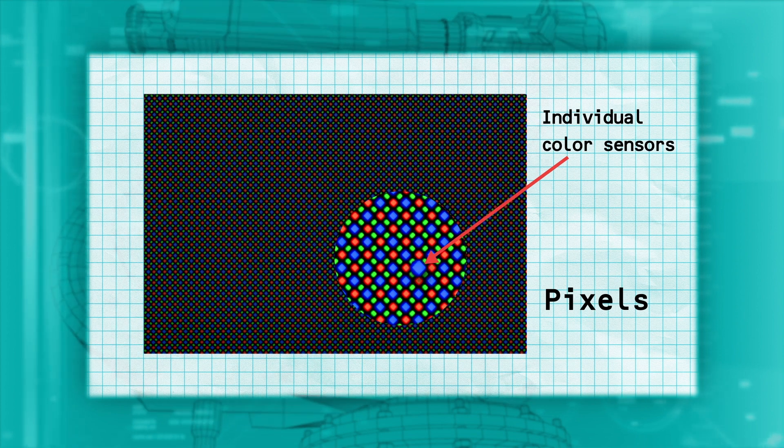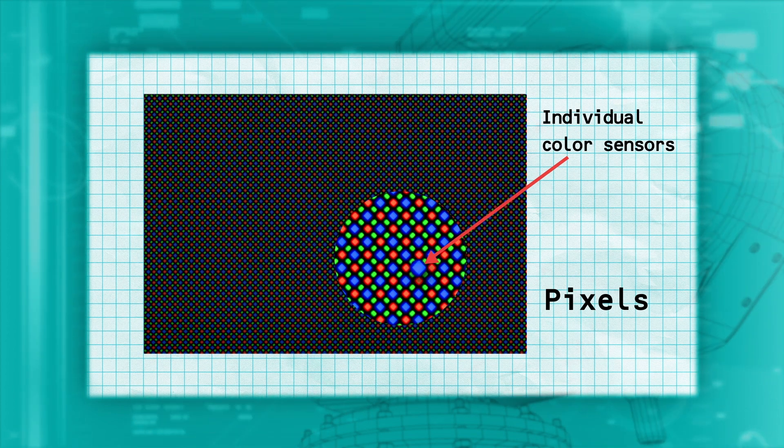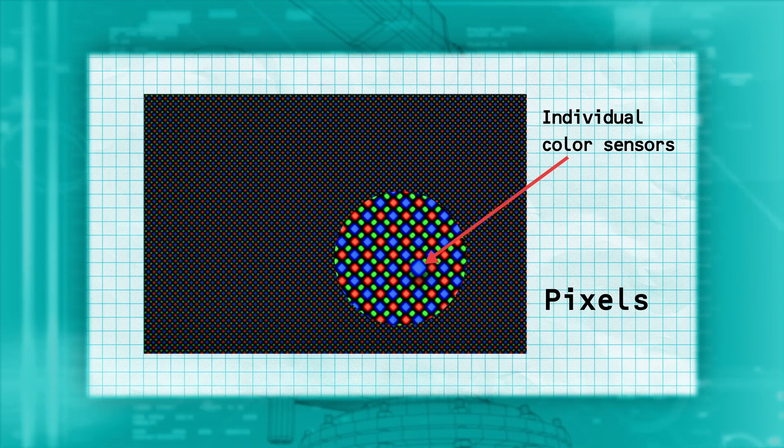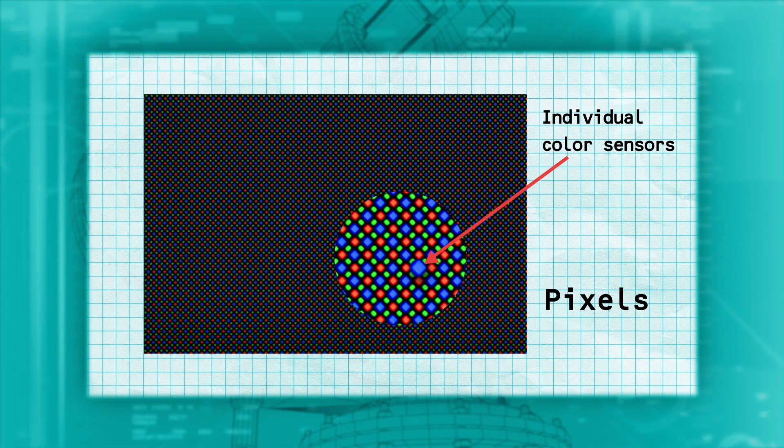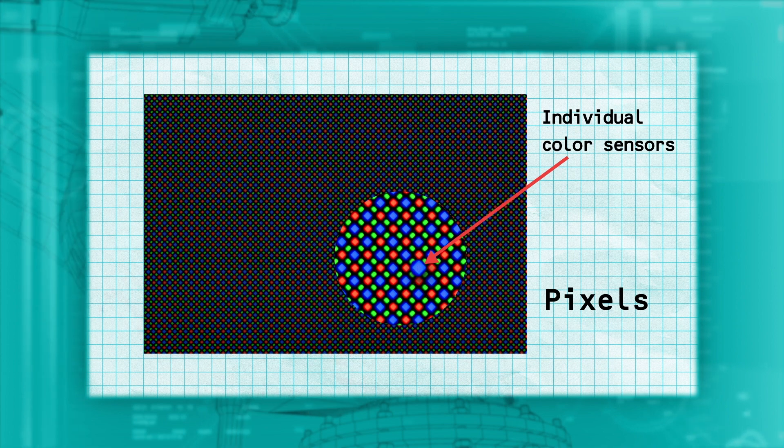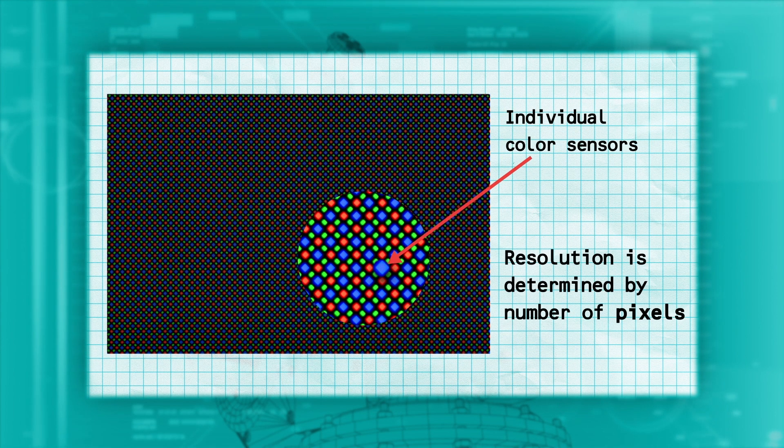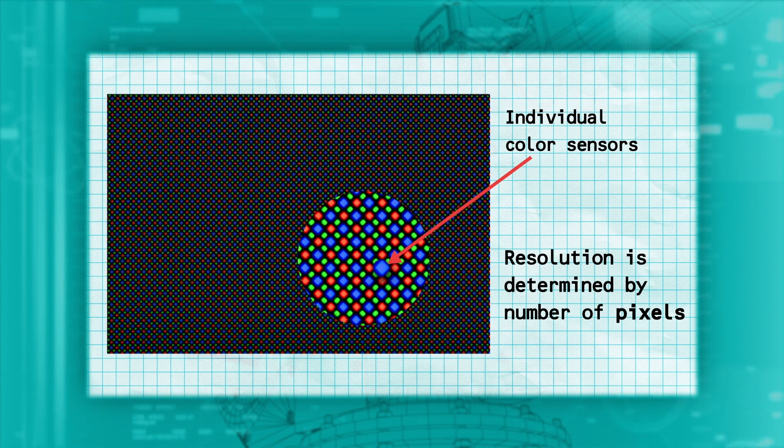Each pixel measures the color of one tiny point in the image. When you put all the small points of color together, you get the full image. The number of these small sensors, or pixels, determines the resolution of the camera. And for a typical camera, there can be millions of pixels.